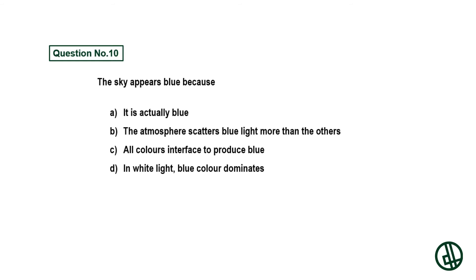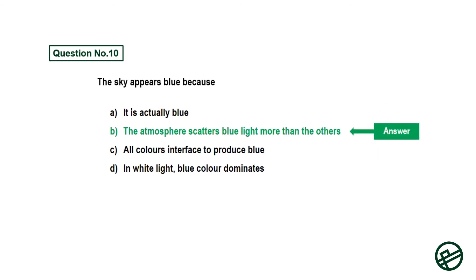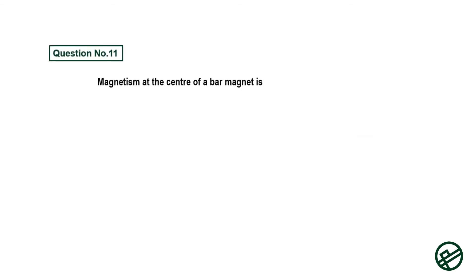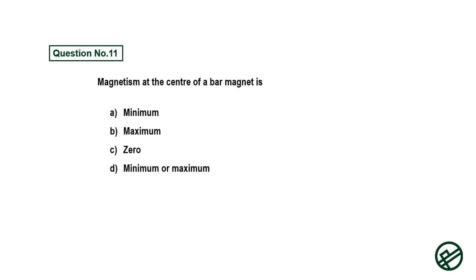Question number ten: The sky appears blue because — option A: it is actually blue, option B: the atmosphere scatters blue light more than the others, option C: all colors interfere to produce blue, option D: in white light blue color dominates. Answer is option B: the atmosphere scatters blue light more than the others.